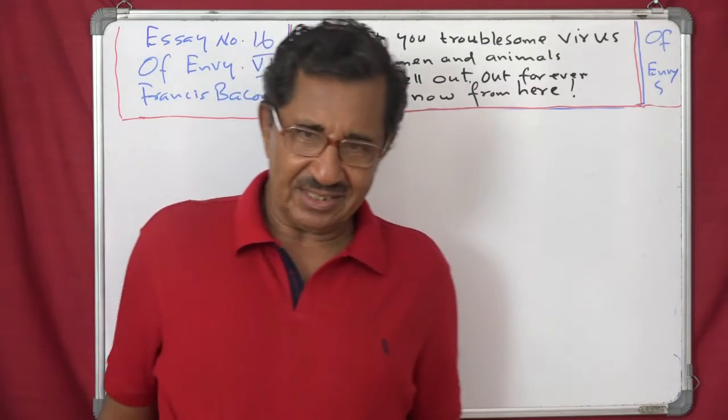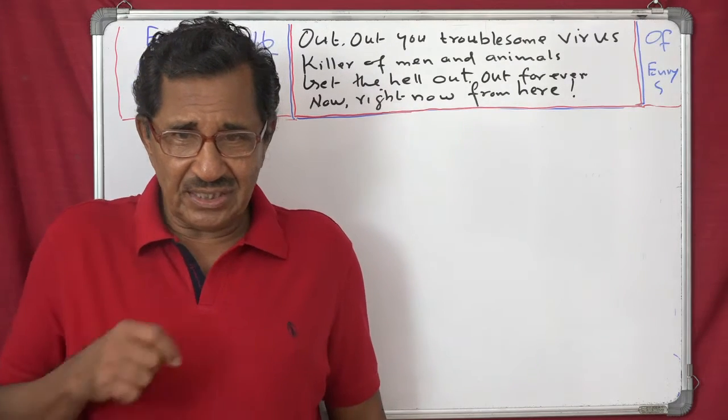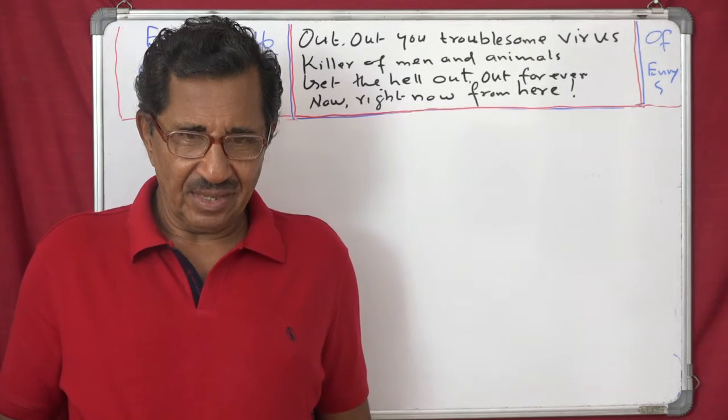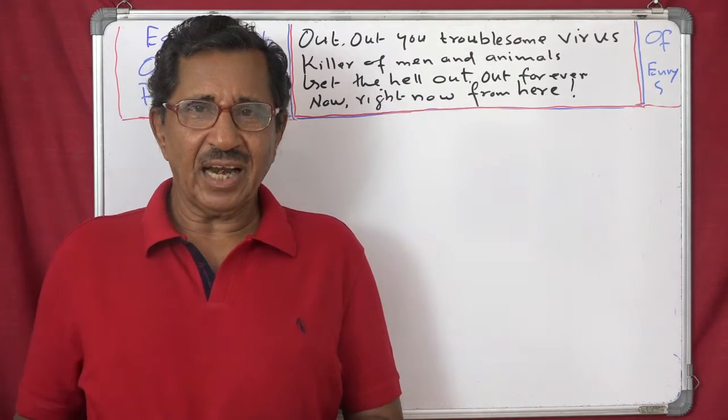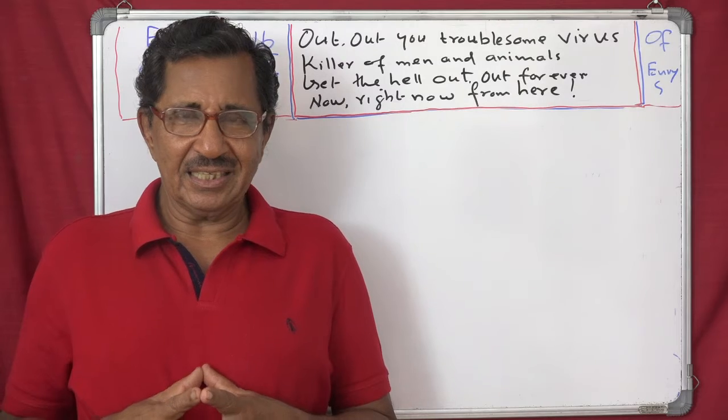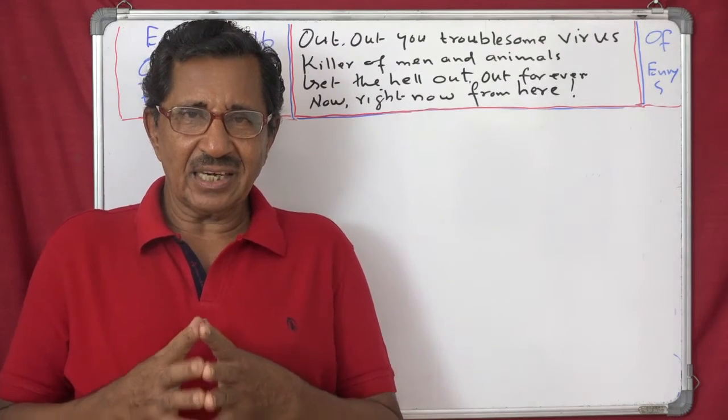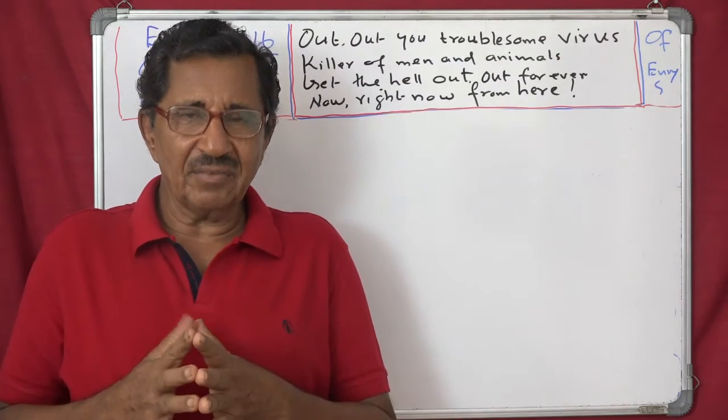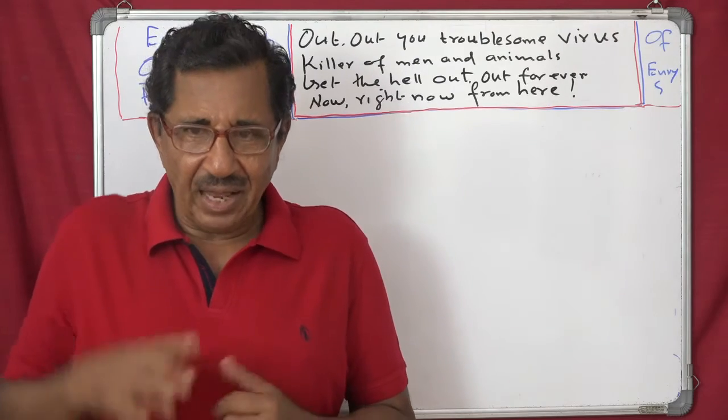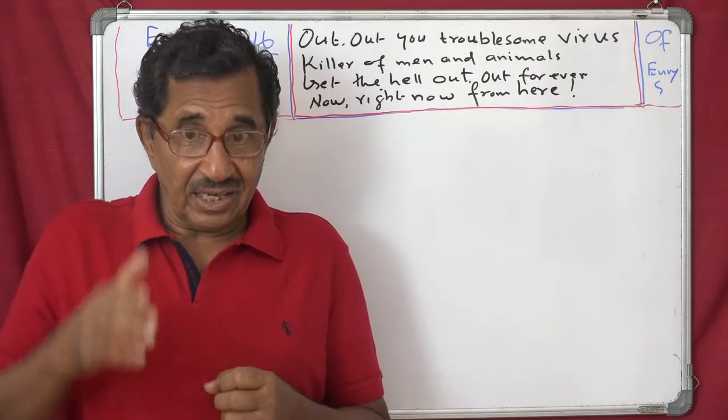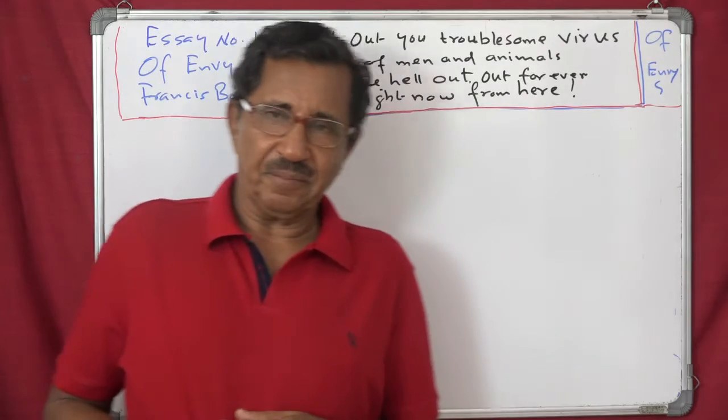Nevertheless, it is to be noted that unworthy persons are most envied at their first coming in. And afterwards, overcome it better. Suppose you find that an unworthy person is becoming great, or is being considered by others as important, a VIP. Then people will start to envy.